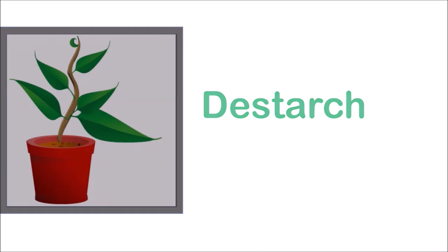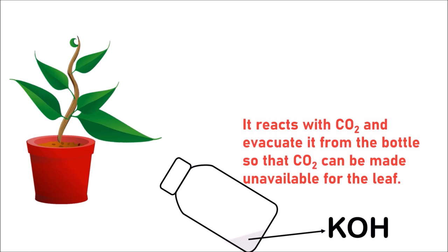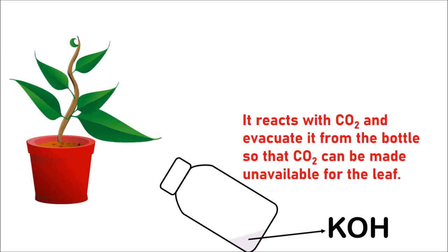After de-starching the plant, take it out of the dark room. Take a wide-mouthed bottle along with potassium hydroxide. Why do we take potassium hydroxide? Potassium hydroxide reacts with carbon dioxide and evacuates it from the bottle, so that carbon dioxide becomes unavailable for the leaf.